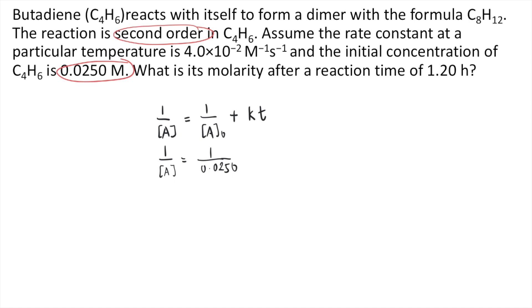plus the rate constant given is 4.0 times 10 to the negative 2. Times the time given is 1.2 hours. But as you can see, the given rate constant is in molar negative 1, second to the negative 1. So we must be consistent with our units, so we need to convert 1.20 hours into seconds.